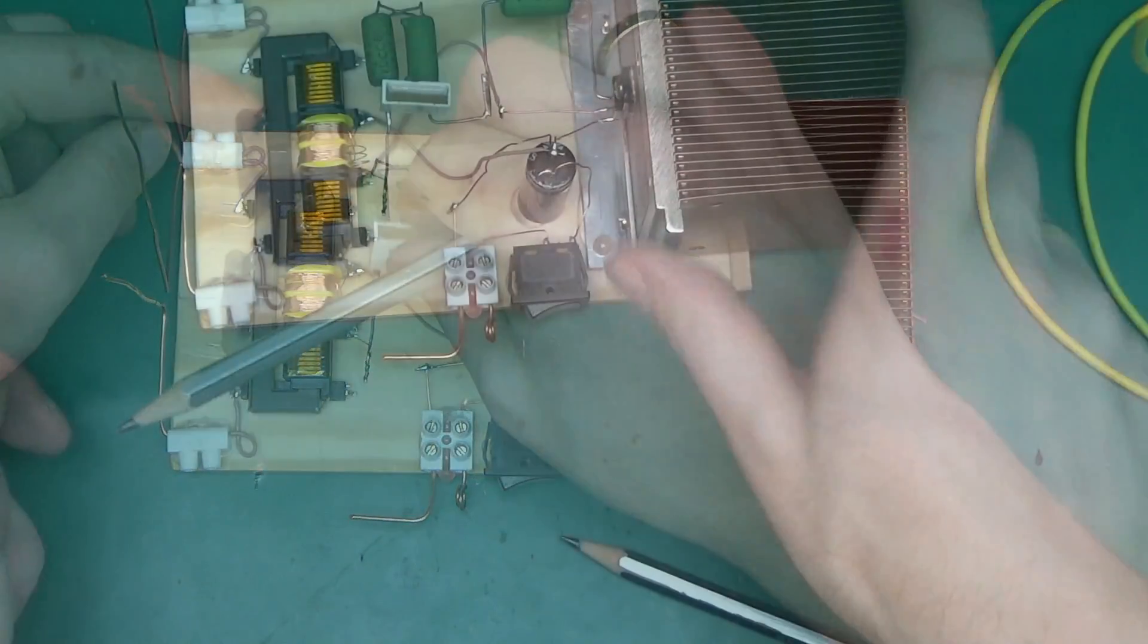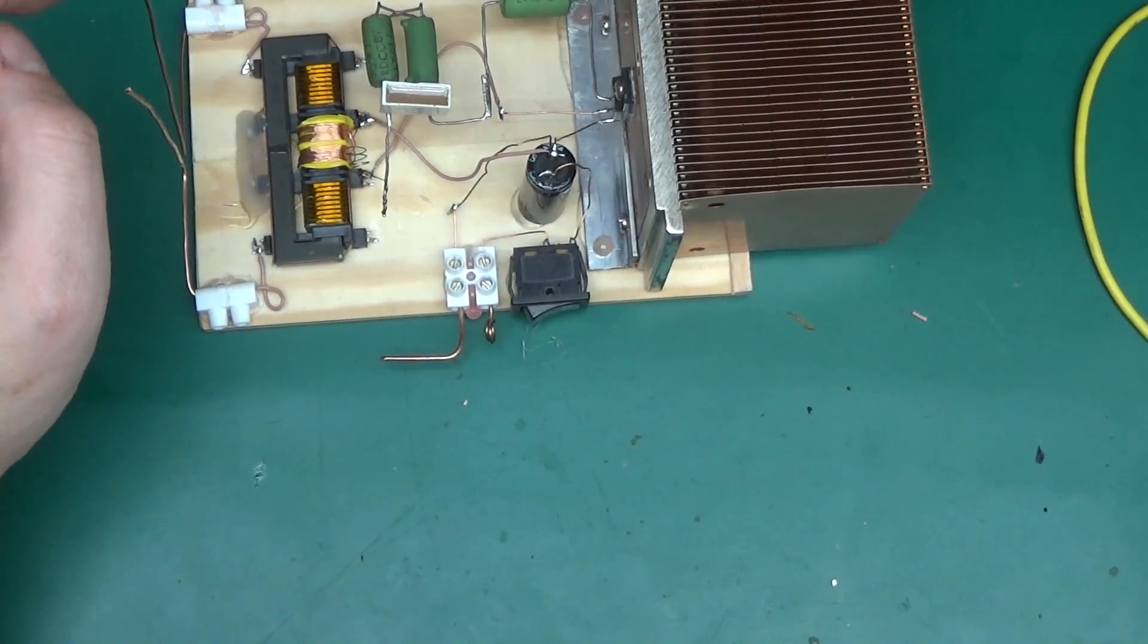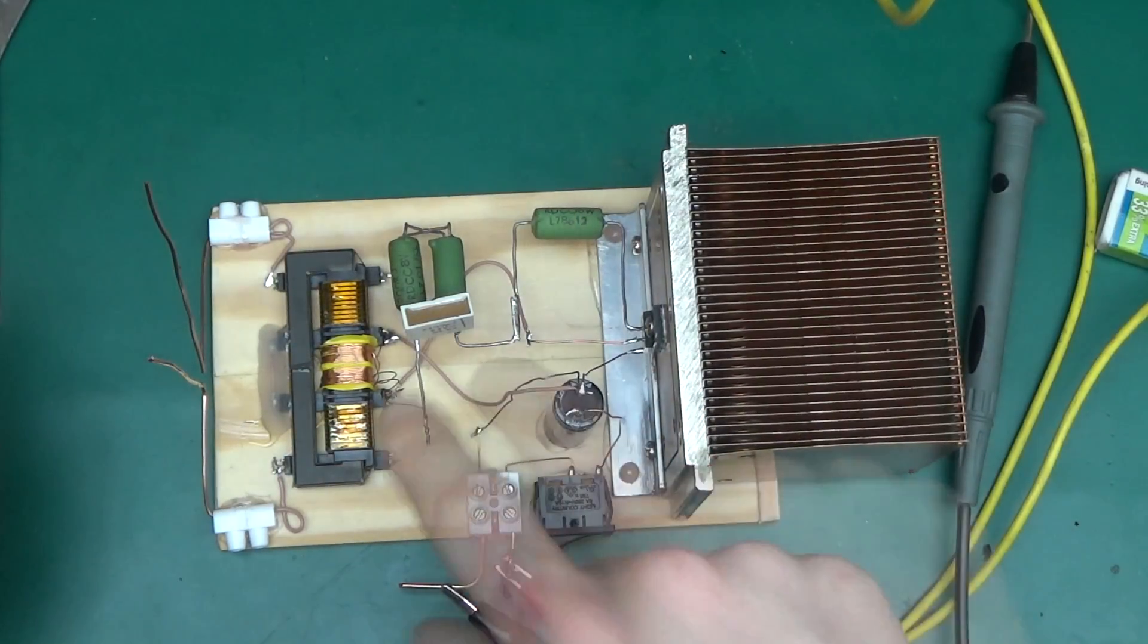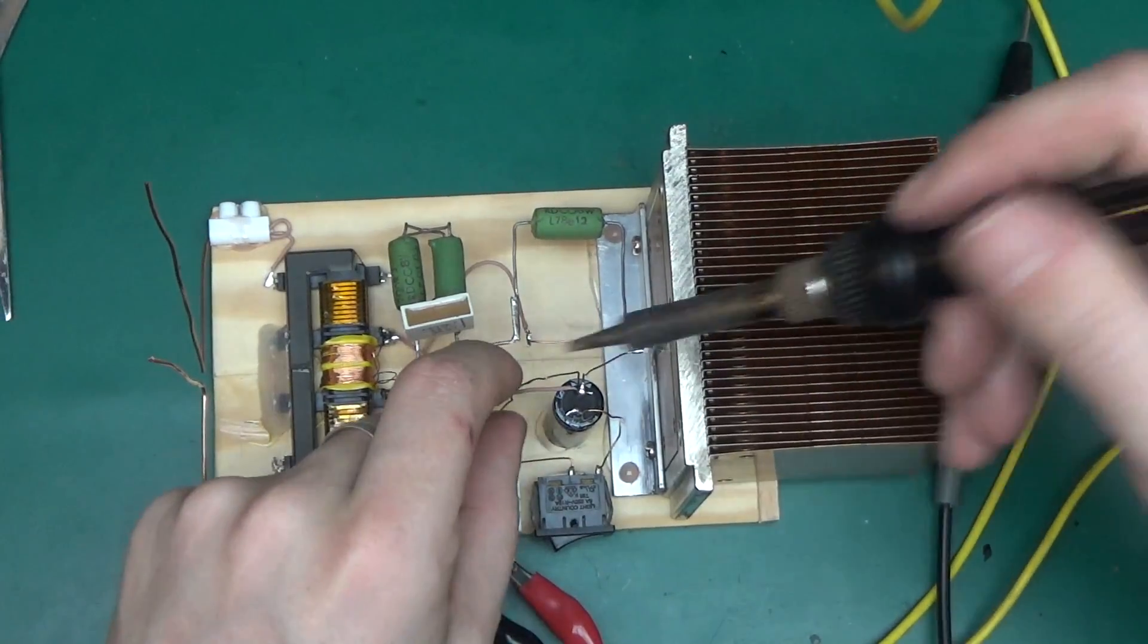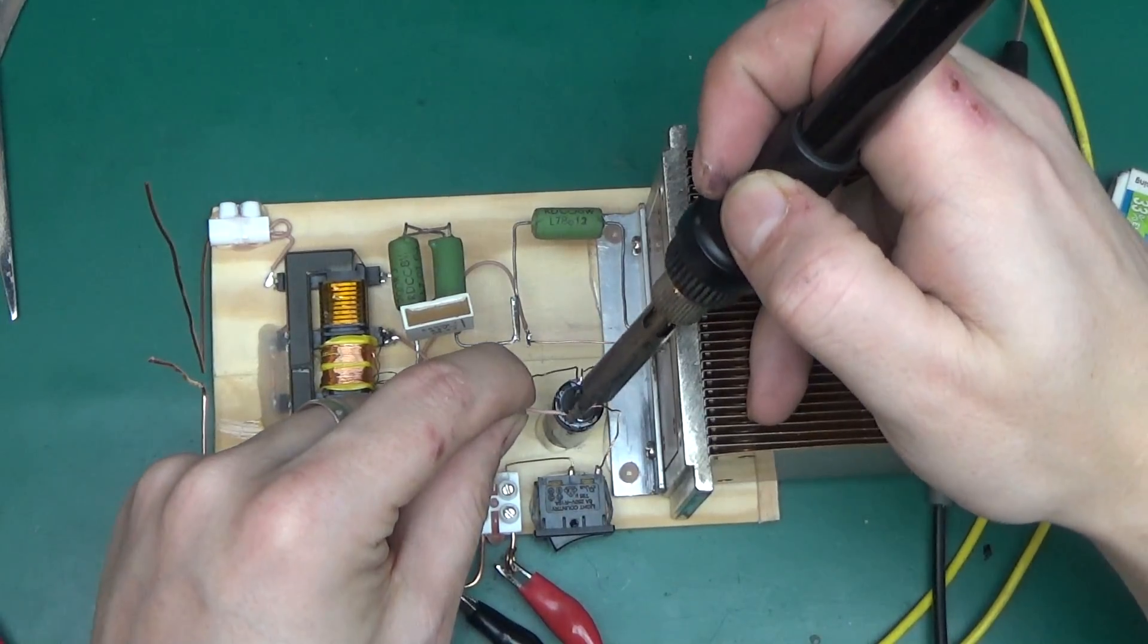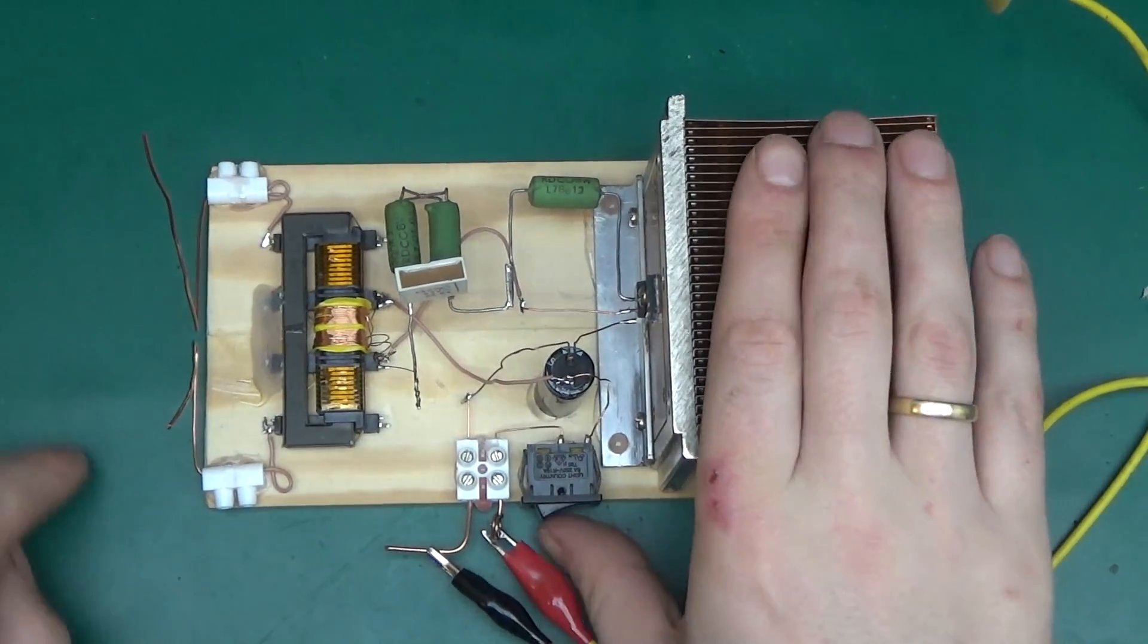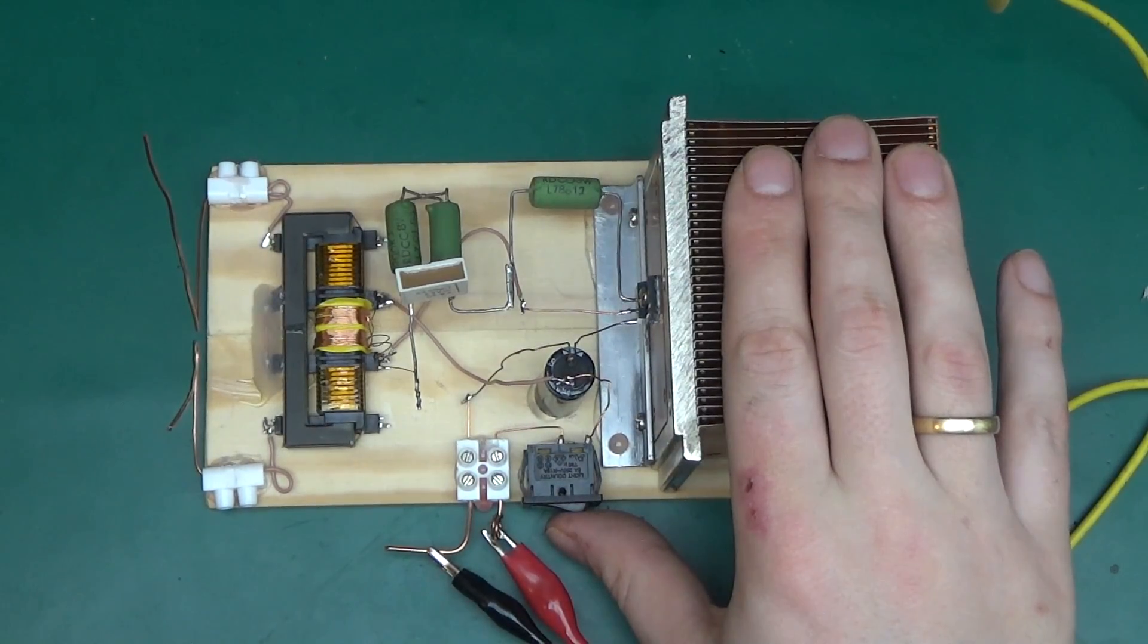And here it is, let's apply some power and see will this oscillate. Oops I've connected the two coils, the common point to the negative. Silly me, that was supposed to go to the positive. Okay let's try again, so power on, okay it's making a noise.